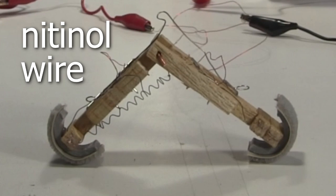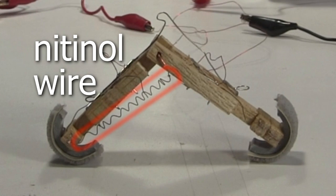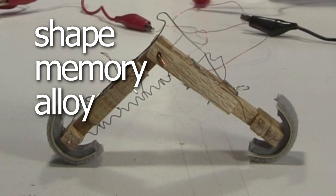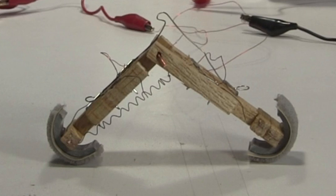How's it work? There's a nitinol wire shaped as a coil under here. That wire is a form of shaped memory alloy, and the shape I programmed it to remember is this compressed coil shape.